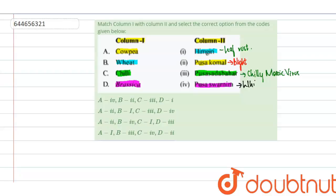Let us now see the different options. Cowpea is matched to the second one, Pusakomal, so A is 2. This is given only in the second and fourth options, so the first and third options can be ruled out. B is matched to 1, which is given only in the second option, so the fourth option can be ruled out.